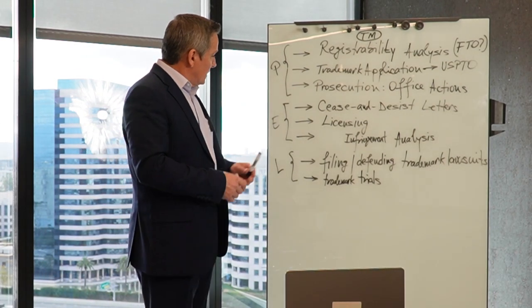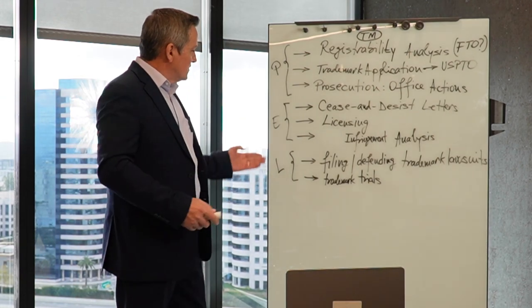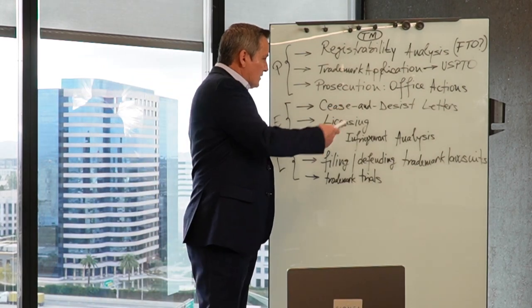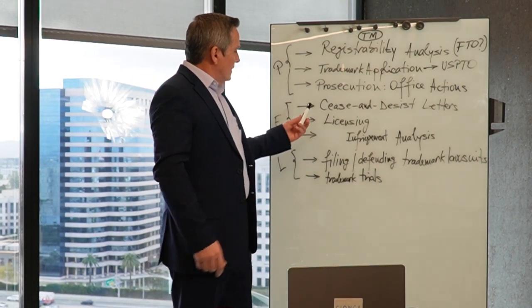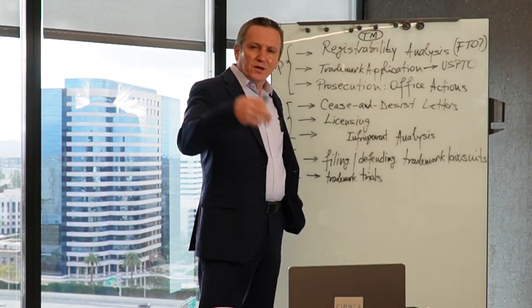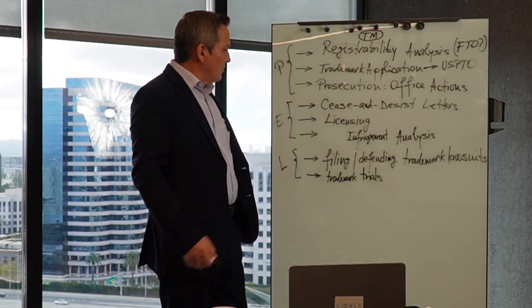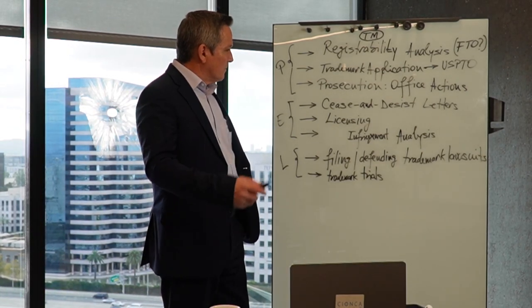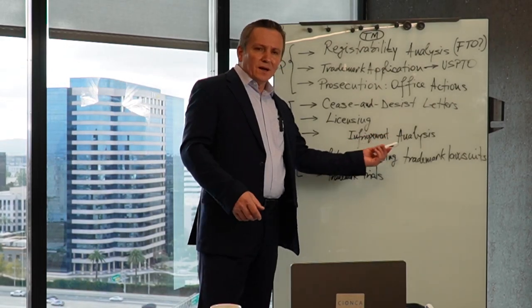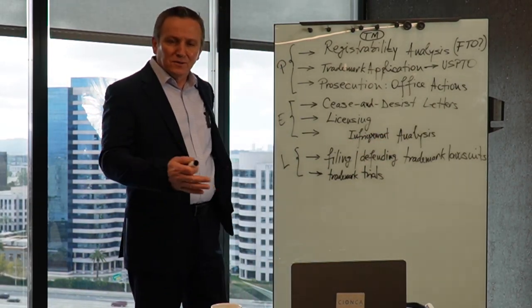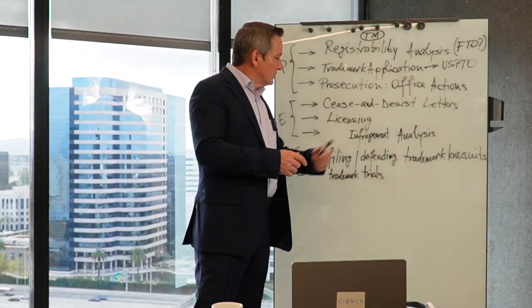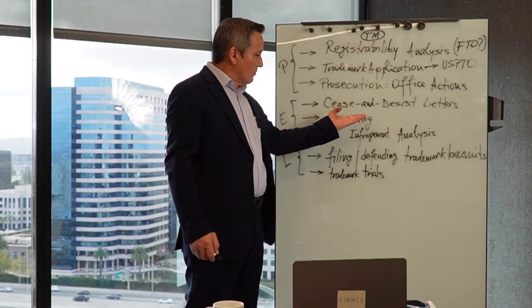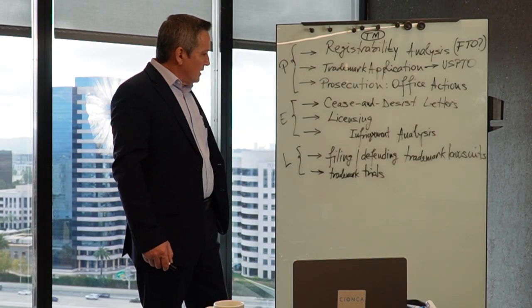The next section is about enforcement of trademark rights. If a client has a trademark registration and someone is infringing it — using a similar name, exact name, or exact logo in the marketplace — we first conduct an infringement analysis to confirm that infringement is occurring. We then send a cease and desist letter asking the infringer to stop, or perhaps propose a licensing deal.